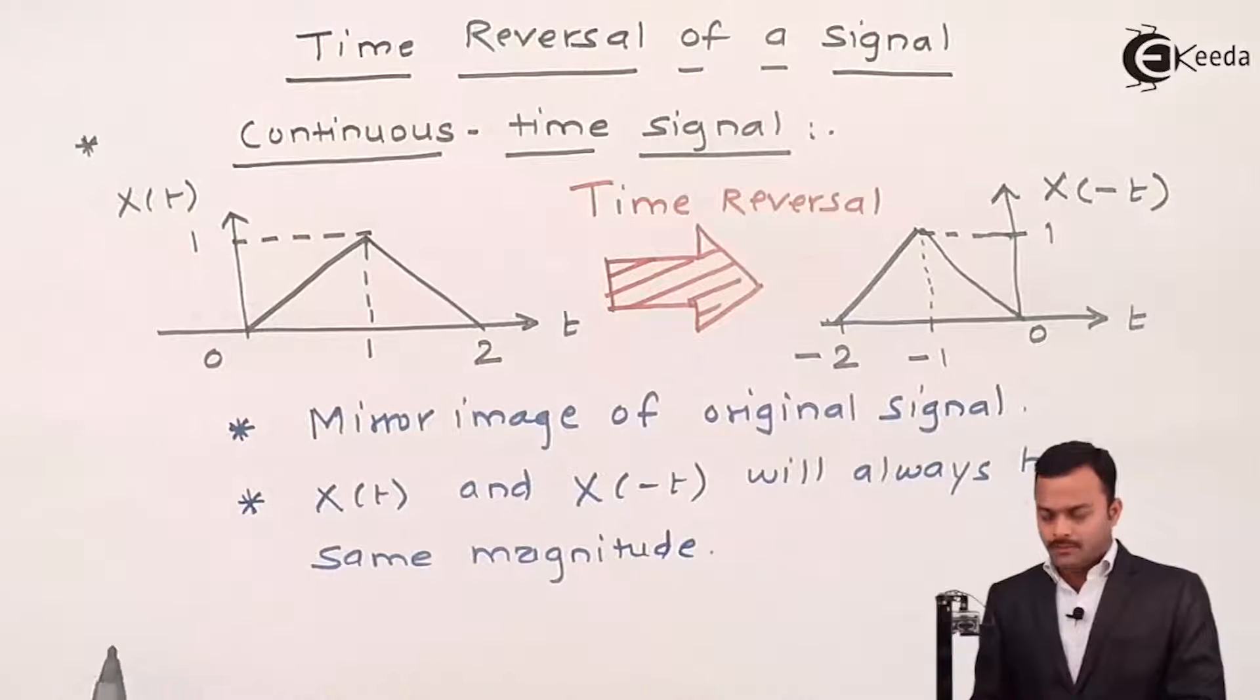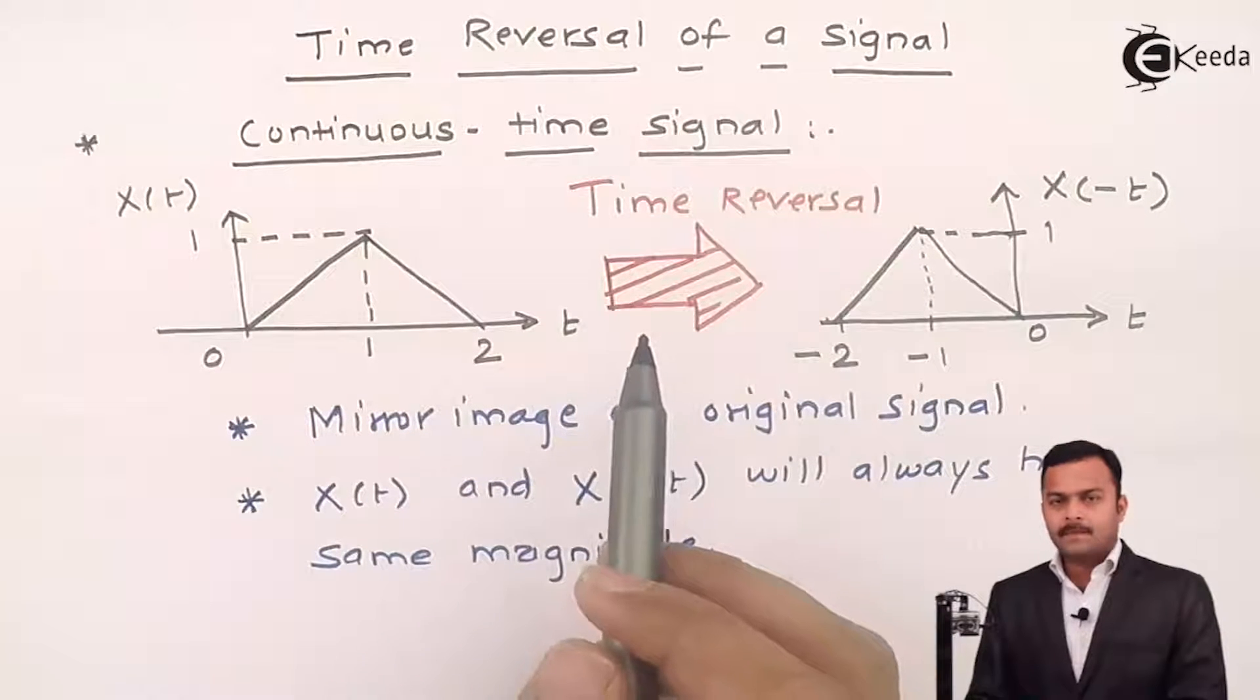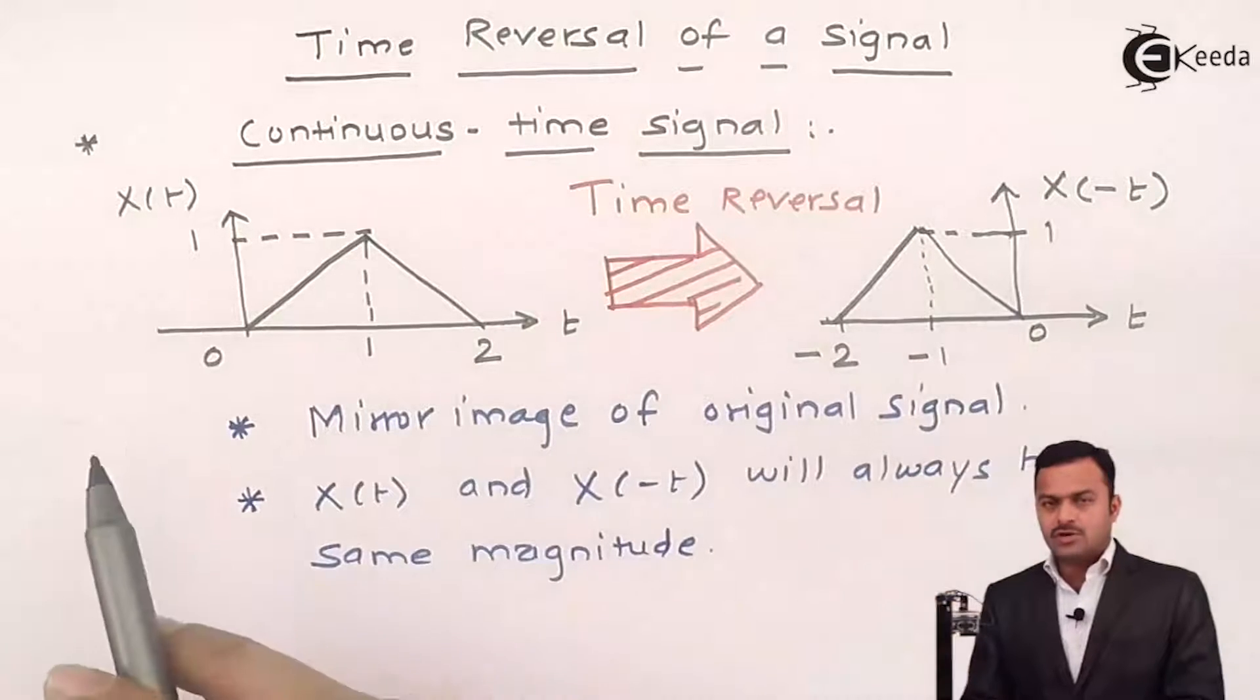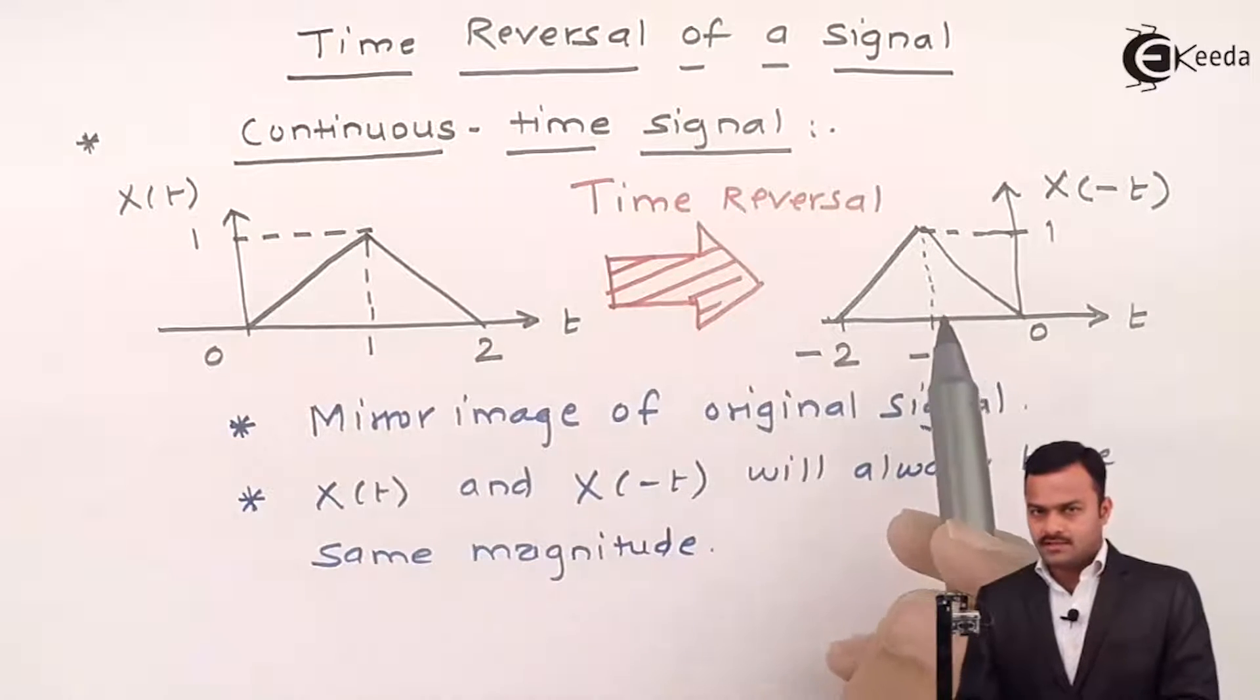So, it is a simple operation where we can say, by doing a time reversal of a signal, we get mirror image of the original signal.